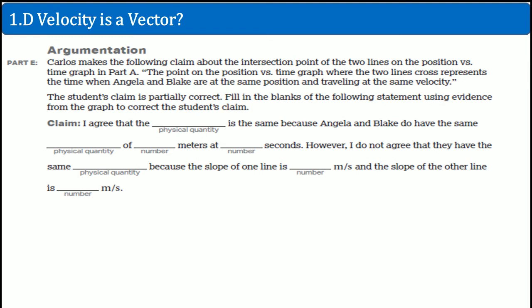Here's the argumentation. Carlos makes the following claim about the intersection between the two points on the position versus time graph in part A. The point on the position versus time graph where the two line crosses represents the time where Angelica and Blake are at the same position and travels at the same velocity. The student's claim is particularly correct. Fill in the blank of the following statement using evidence from the graph to correct the student's claim. I agree that the position is the same because Angelica and Blake do have the same position at 9.5 meters and that is at 1.9 seconds. However, I do not agree that the velocity because the slope of the line is 5 and the slope for the other line is negative 3.